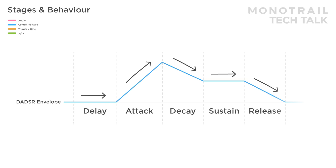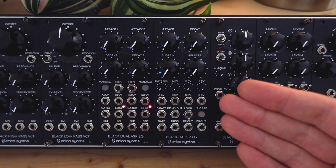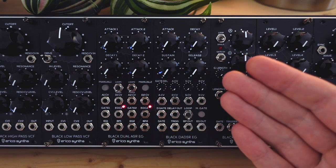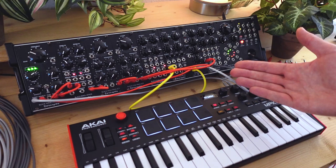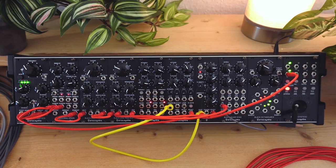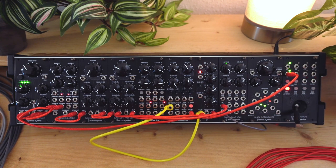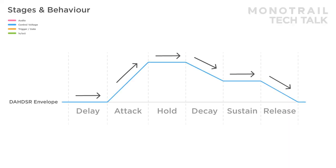A less common stage is a delay stage. This is added in front of the envelope and sets the time the positive signal generated by the envelope is delayed after it receives a trigger or gate. A delay stage is great for deep sound design — for example, when you want to change the character of a sound a bit after you press the key, or create shifted motion when you use a single gate to fire two envelopes. So to wrap up, an envelope that contains all the stages we've talked about would be a delay, attack, hold, decay, sustain, release envelope. Some digital synths or modules have even crazier combos, but this is enough for now.